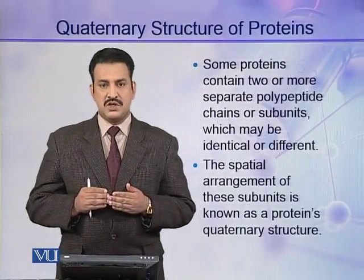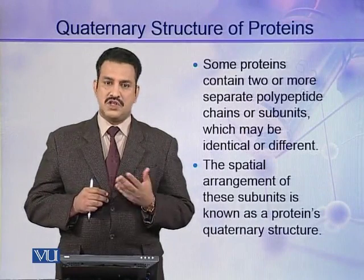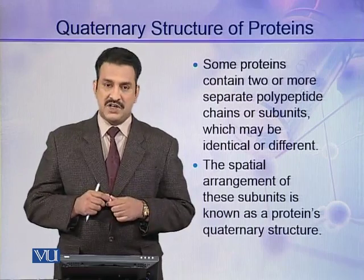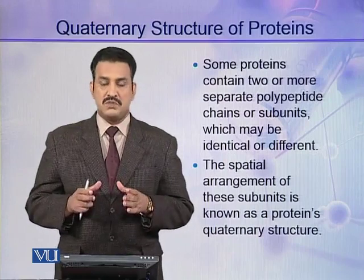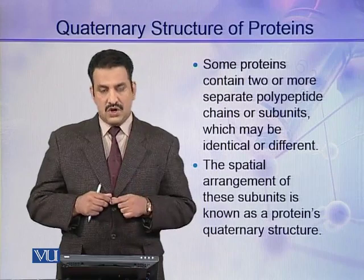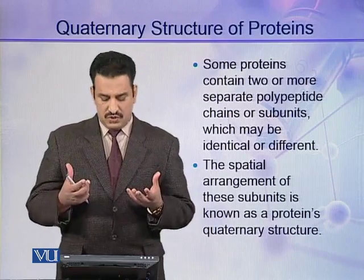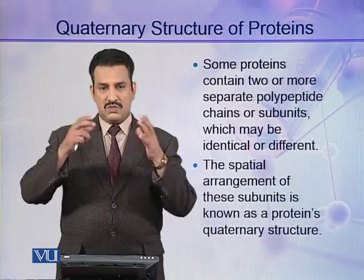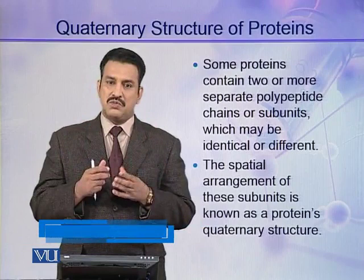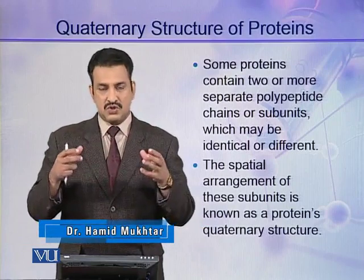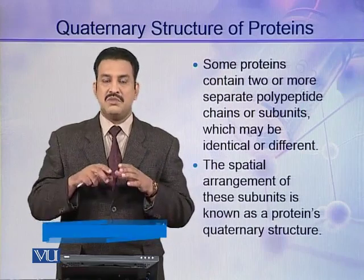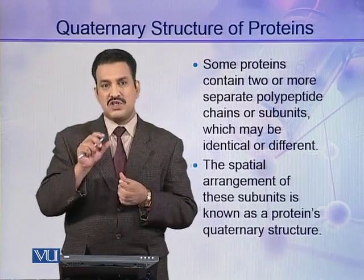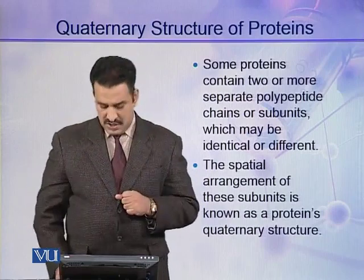Some bigger proteins may not only consist of a single polypeptide chain. They may contain two or more separate polypeptide chains, also called subunits. These subunits may be similar, identical, or different. The special arrangement of these subunits is known as the protein's quaternary structure — the arrangement of multiple polypeptide chains that together make up a single protein molecule.